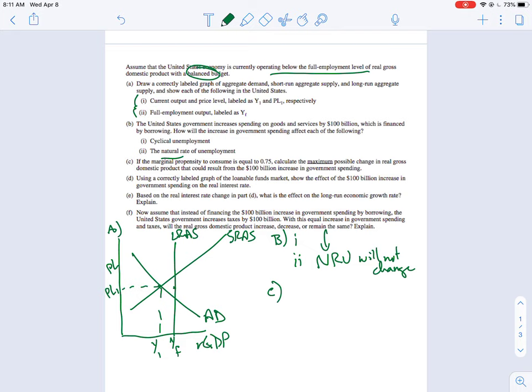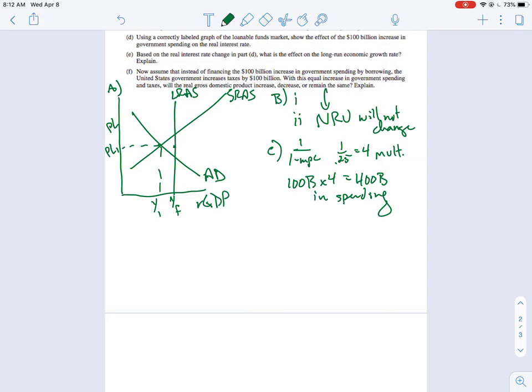If the MPC is 0.75, calculate the maximum possible change from a $100 billion increase. So remember that you've got 1 over 1 minus MPC, or 1 over MPS. So 1 over 0.25 equals 4. That's going to be our multiplier. So $100 billion in spending times 4 gives us $400 billion in spending. So that is the maximum change. Of course, it could be less, but that's the maximum.